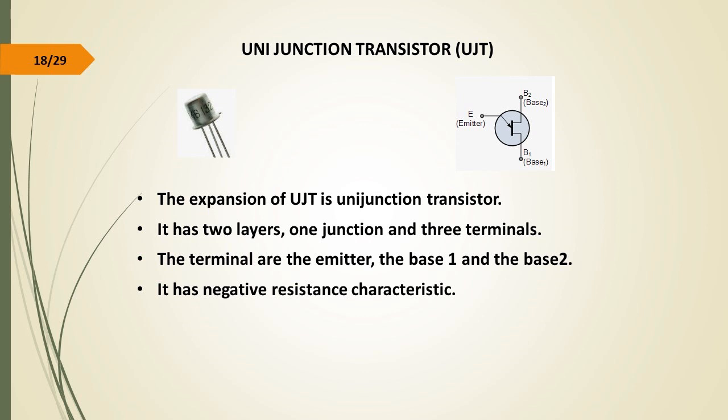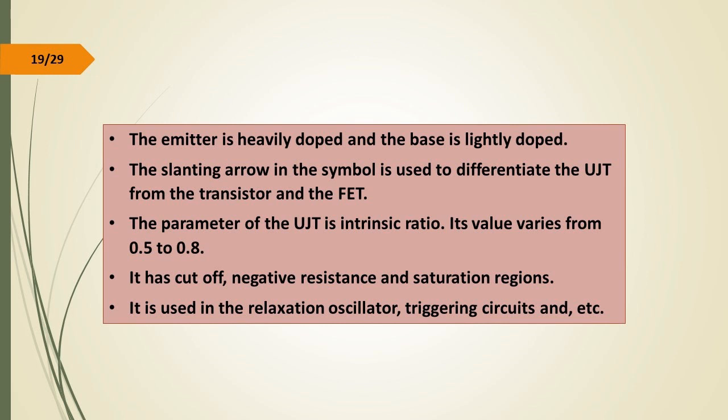Unijunction Transistor (UJT). The UJT has two layers, one junction, and three terminals. The terminals are the emitter, the base one, and the base two. It has negative resistance characteristics. The emitter is heavily doped and the base is lightly doped. A slanting arrow in the symbol is used to differentiate the UJT from the transistor and the JFET.